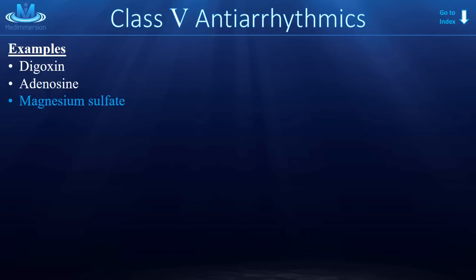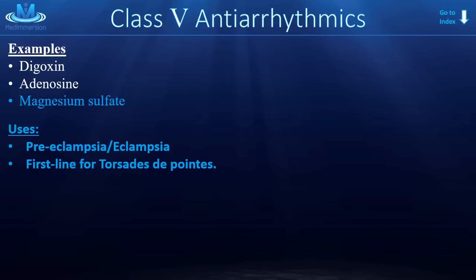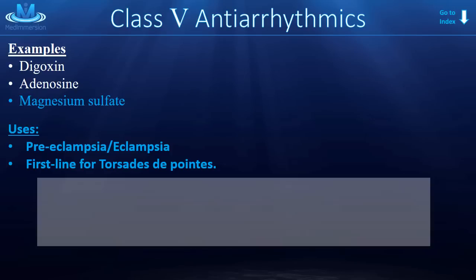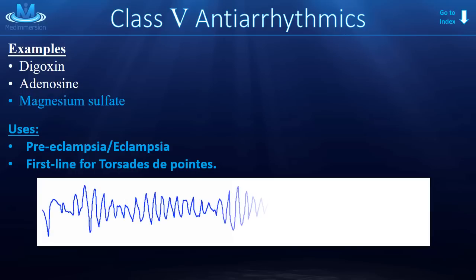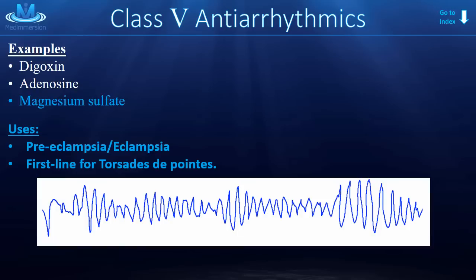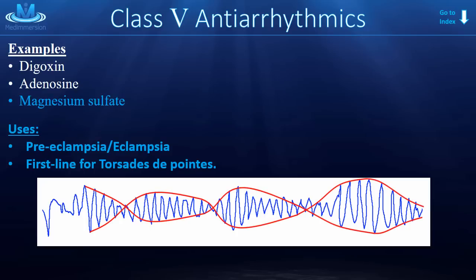The last class 5 antiarrhythmic is magnesium. Magnesium is high yield for boards for two main things: eclampsia and preeclampsia, and torsades de pointes — another high yield topic. Torsades de pointes is a French term meaning 'twisting of the points,' named because the waveform on an EKG looks like it's twisting back and forth like a ribbon. It's a very specific waveform that can signify an impending cardiac disaster, potentially leading to sudden cardiac death. It doesn't happen all that often in the real world, but it's definitely a board favorite.